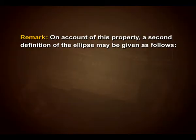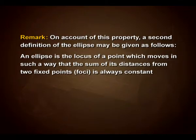We have an important remark to make here. On account of this property, a second definition of the ellipse may be given as follows: an ellipse is the locus of a point which moves in such a way that the sum of its distances from two fixed points, that is the foci, is always constant.